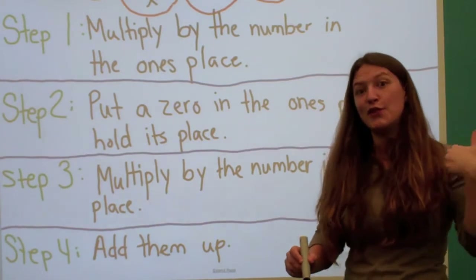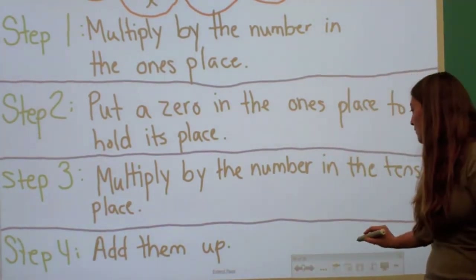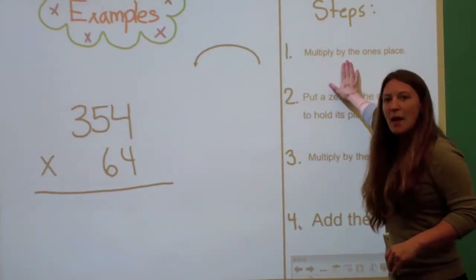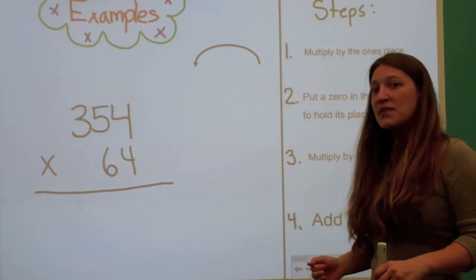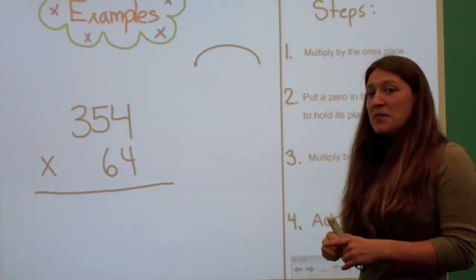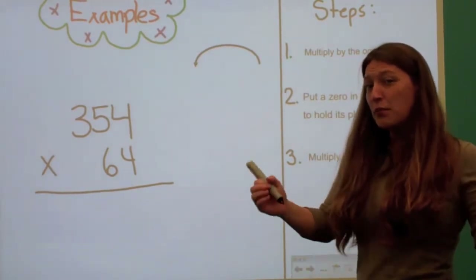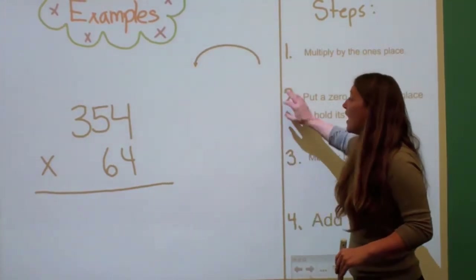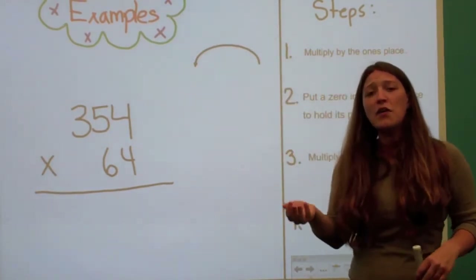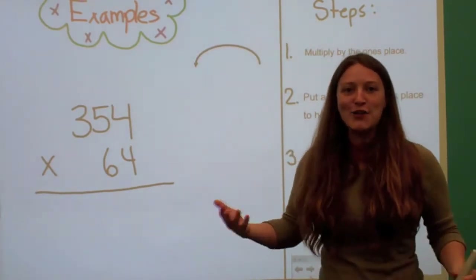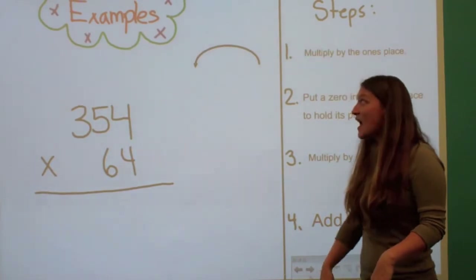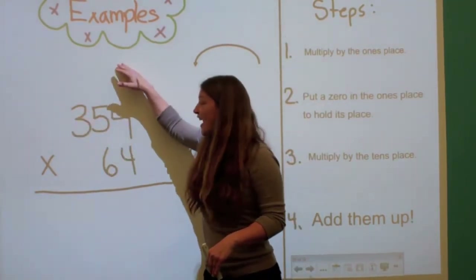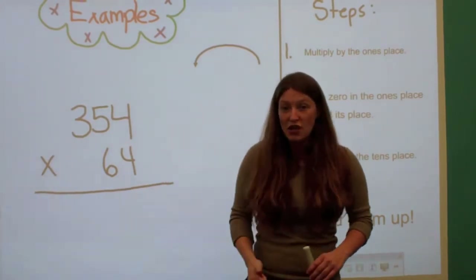If you haven't written the steps down yet, rewind and do that now. Now it's time for our example. I've written the steps on the side so I can always go back and check them. When it's time for you to do practice problems in the practice section of your notebook, make sure you go back and follow the steps in order — this is a process. I also have my broken windshield wiper to remind me that when I'm multiplying, I always go in that curved direction.